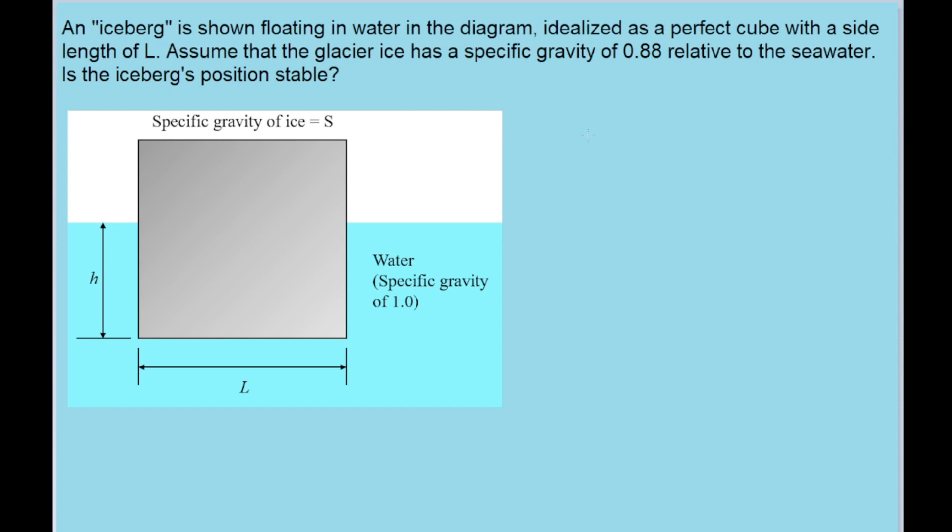First things first, I'm going to draw a very simple free body diagram. So there are two forces acting on the block here. There's the weight on the block acting downwards, and then there's the buoyant force acting upwards. Assuming that the block is stable and in equilibrium, these should be equal to one another.